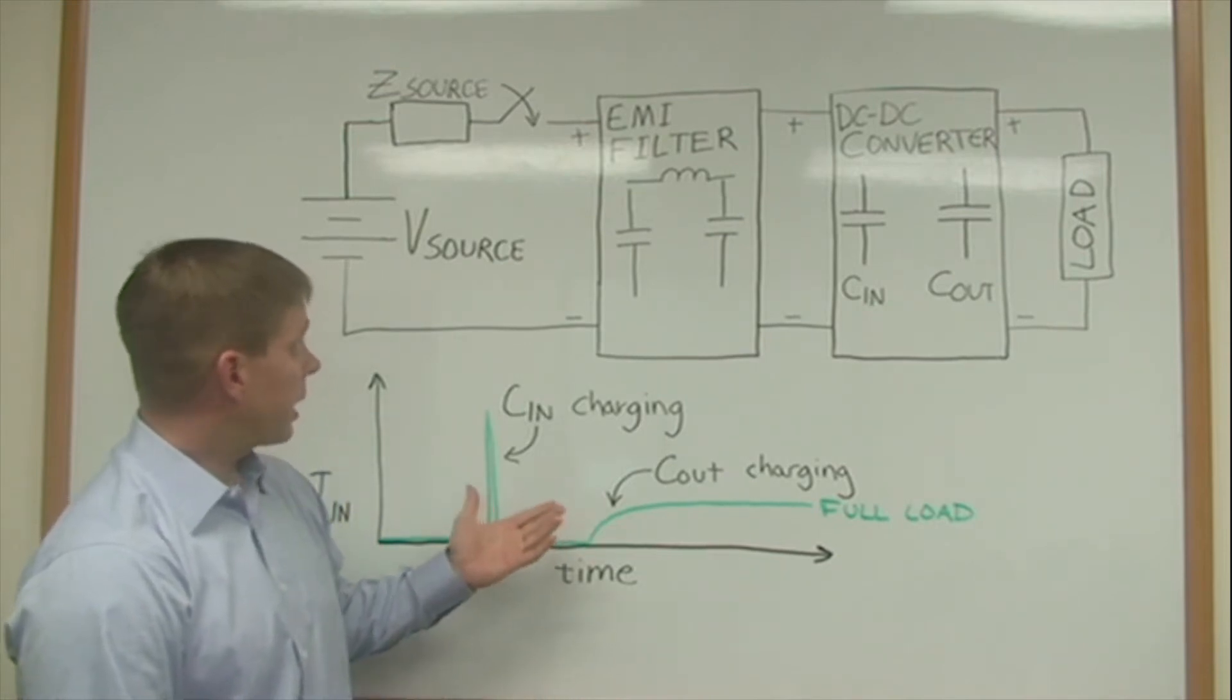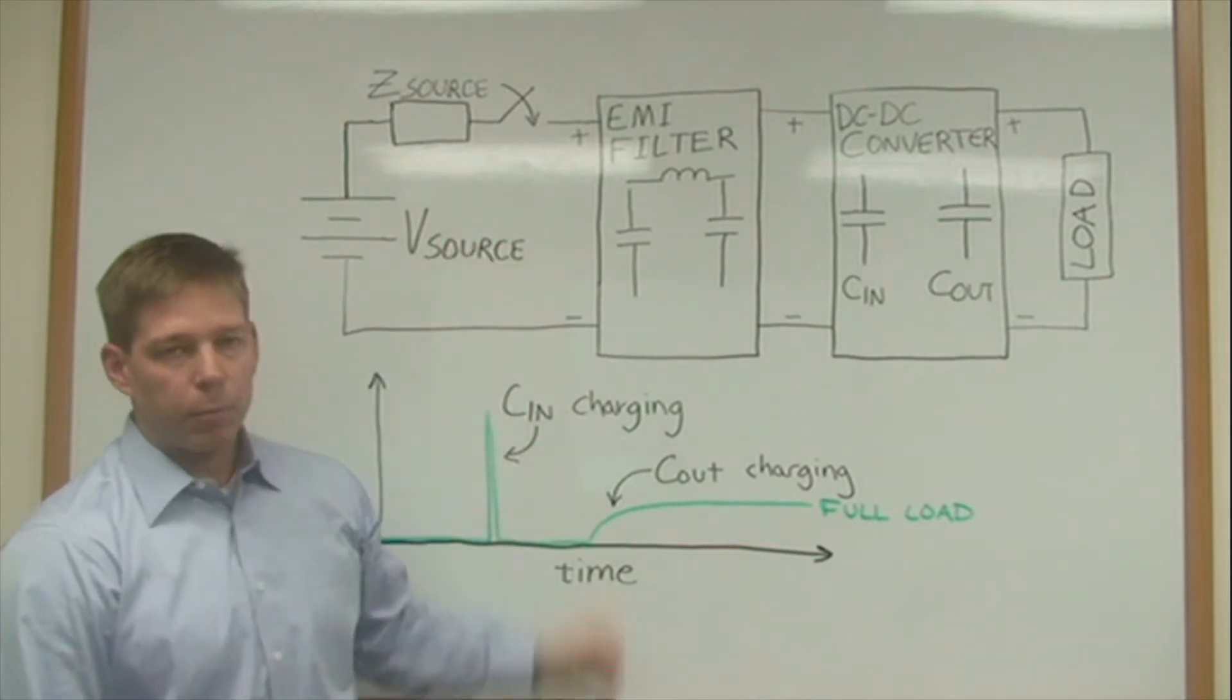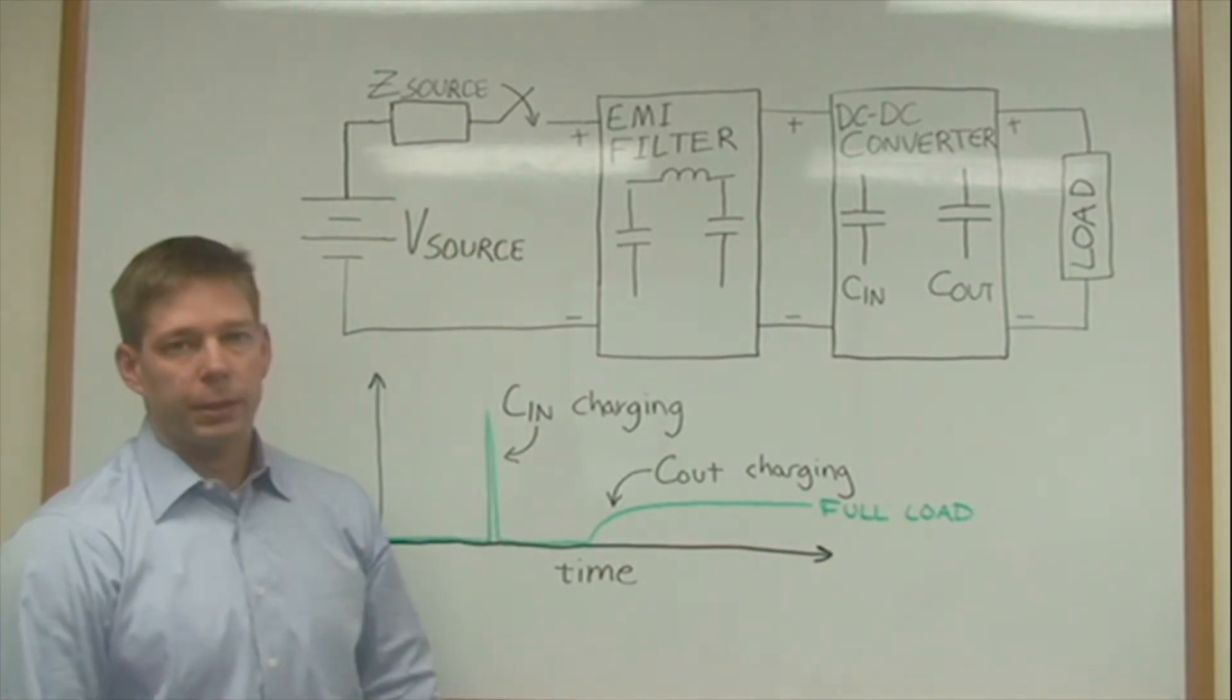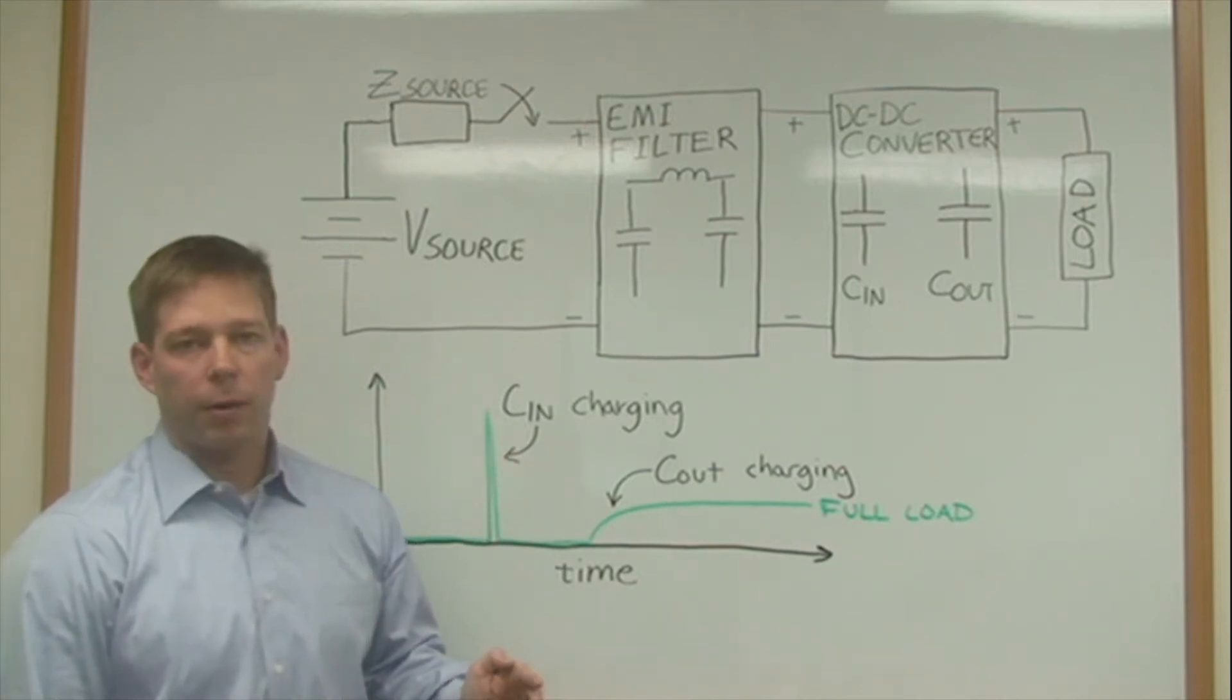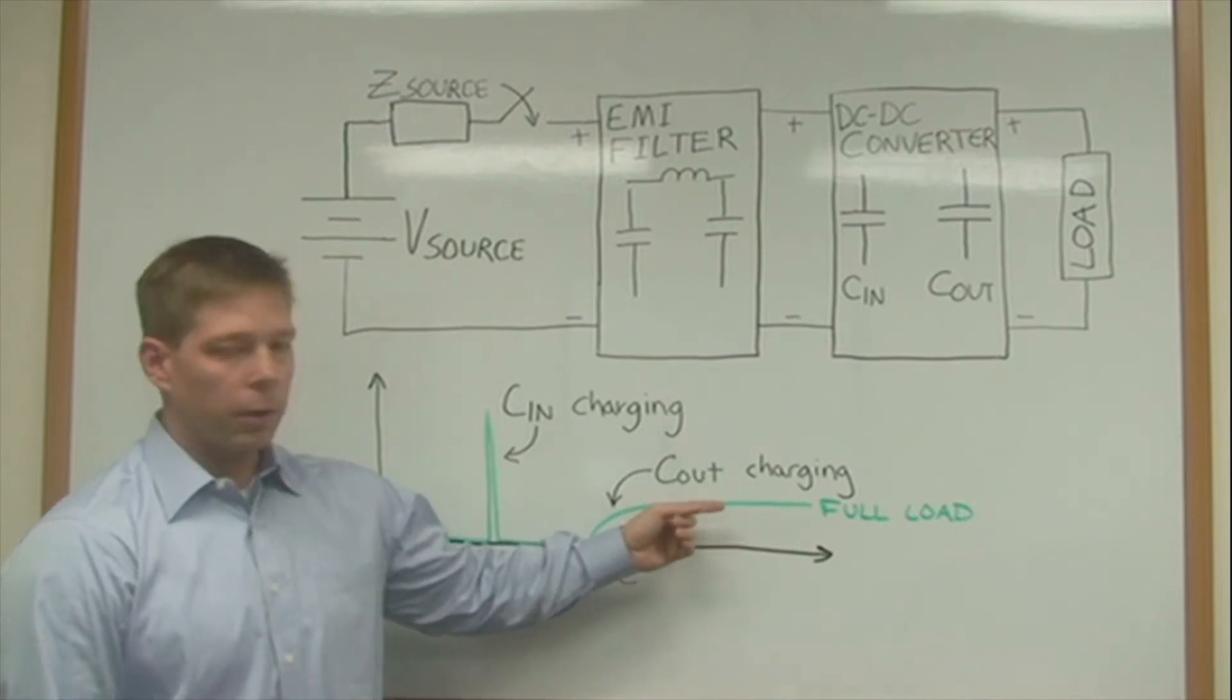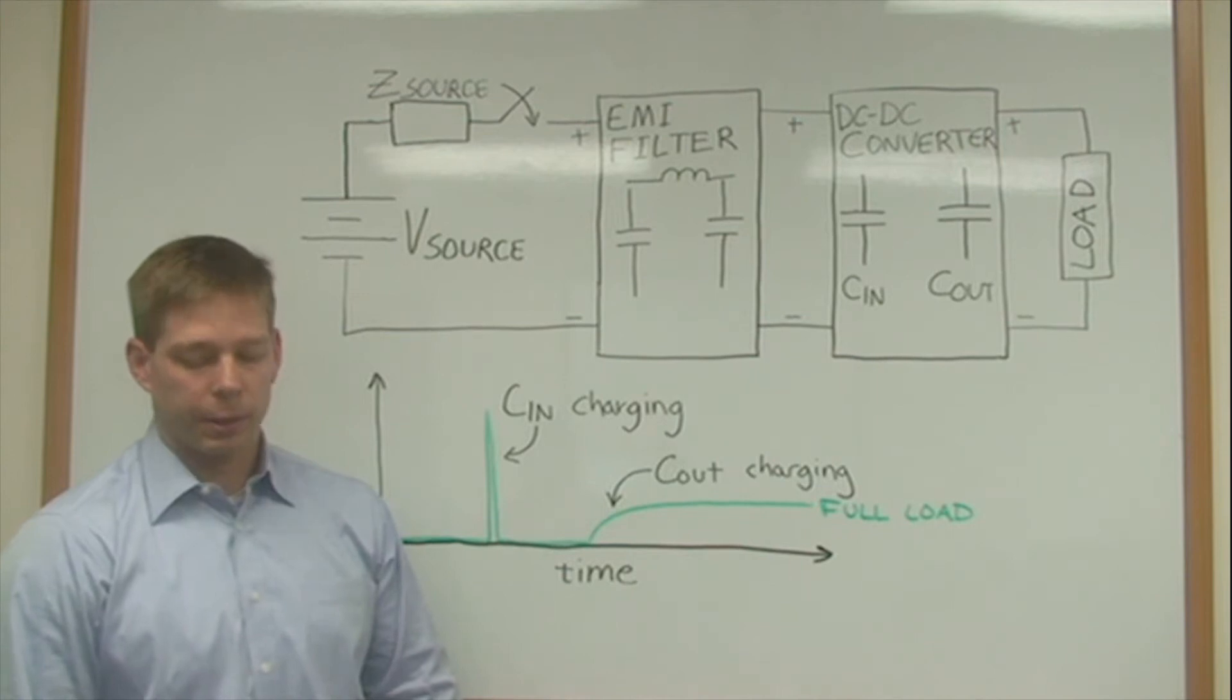So in those cases the fast dV/dt of the input voltage and the low source impedance causes this current to rise very rapidly, can reach peaks many times higher than the typical full load running current and that can cause EMI issues in a system.